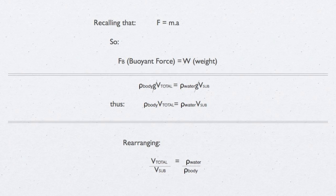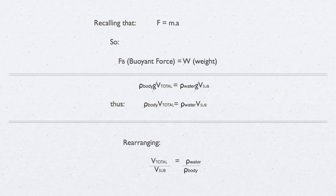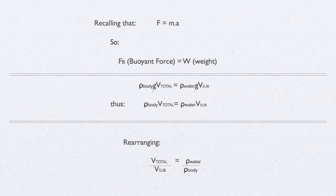The weight of the body itself equals its mass times gravity. Rearranging, we find that the submerged fraction of the body equals the ratio of the density of the body to the density of the water.